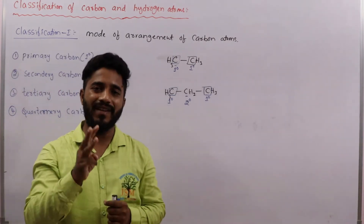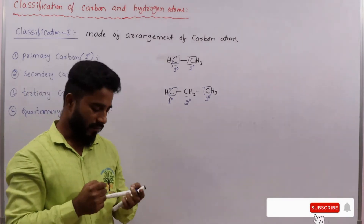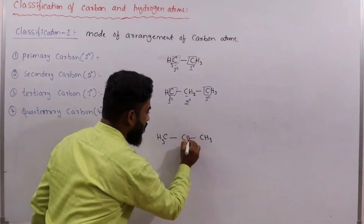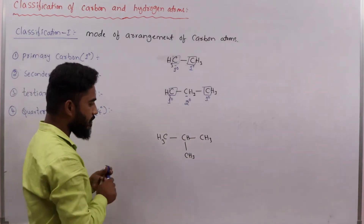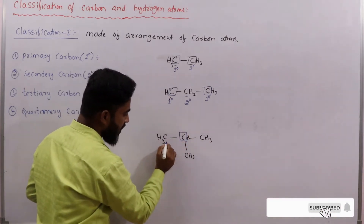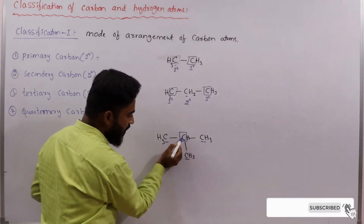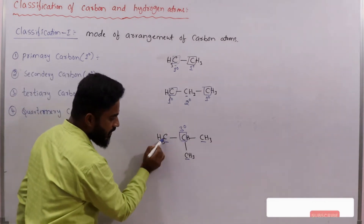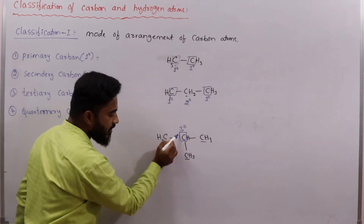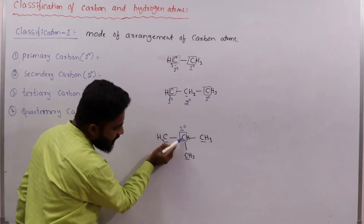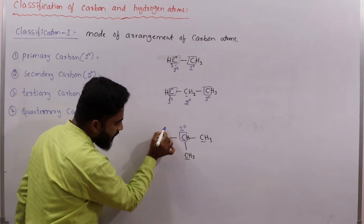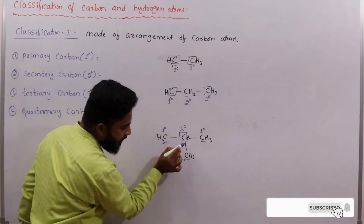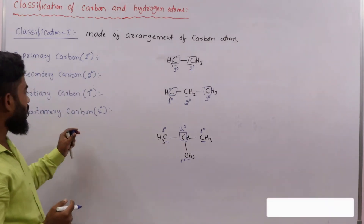Tertiary carbon means if a carbon atom is bonded to three other carbons, it is said to be tertiary carbon. For example, in a molecule with CH3 groups arranged around a central carbon, that central carbon is bonded to three other carbons — one, two, three — so it is said to be tertiary carbon. The surrounding CH3 carbons are each bonded to only one carbon, so they are primary carbons.